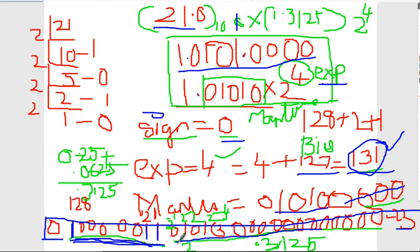1 plus mantissa means: this bit is 2 to the power of minus 1, this is 2 to the power of minus 2, this is 2 to the power of minus 3, this is 2 to the power of minus 4 which is 0.0625, and this is 2 to the power of minus 2.